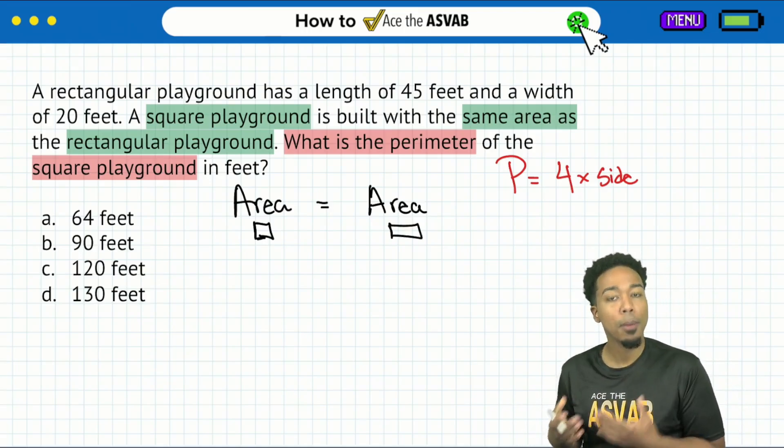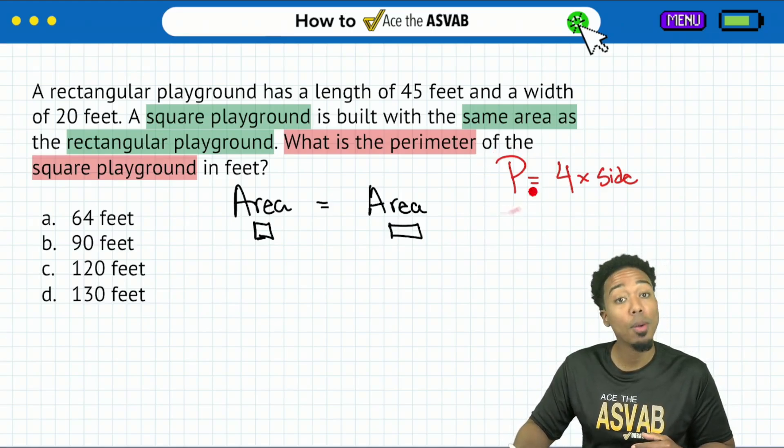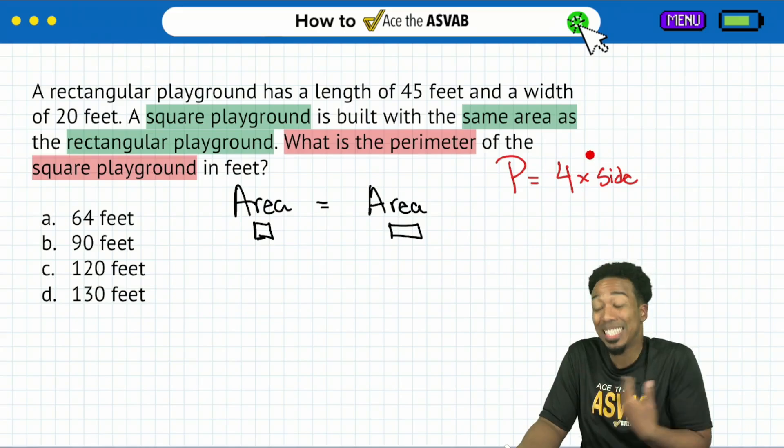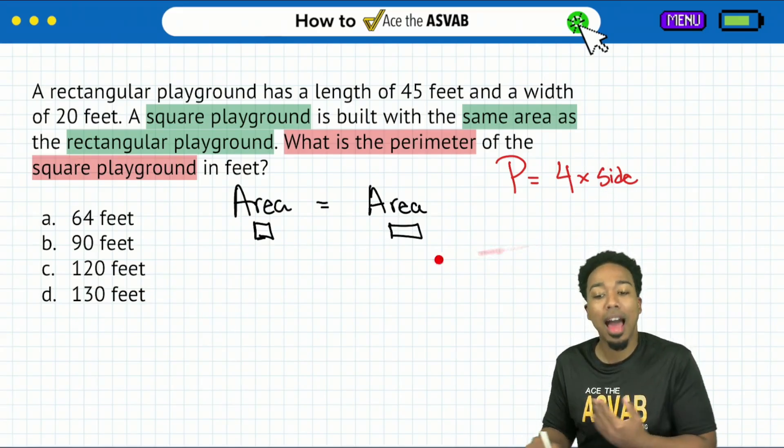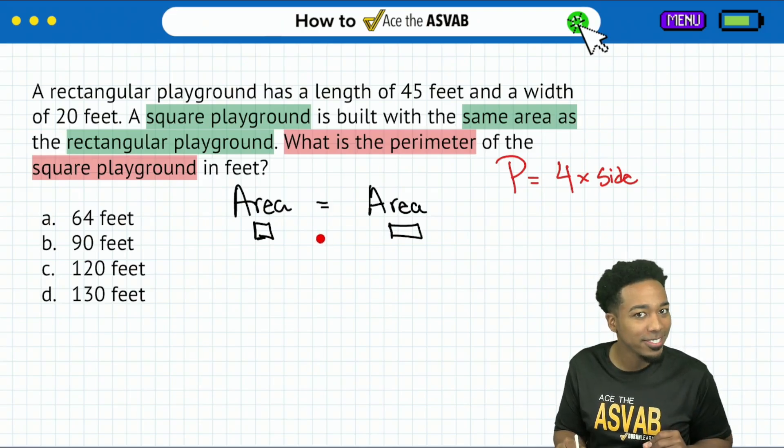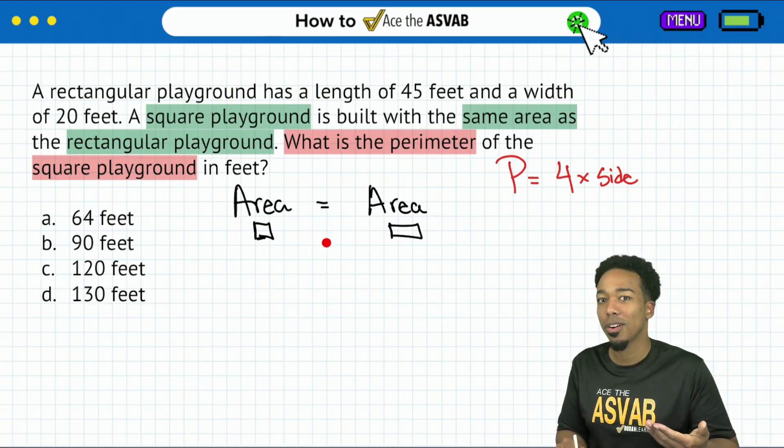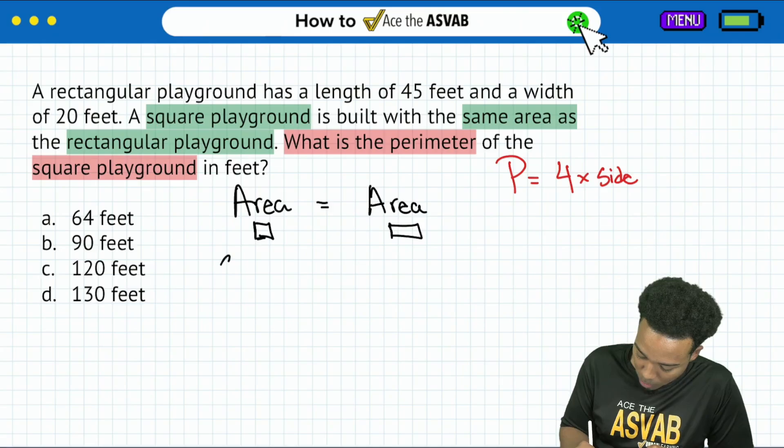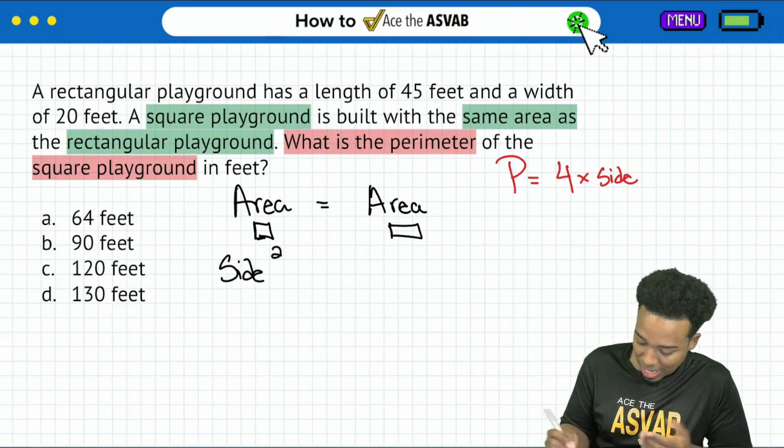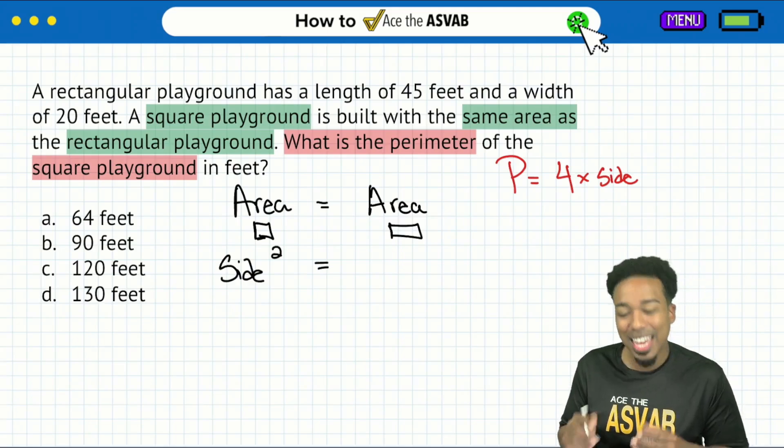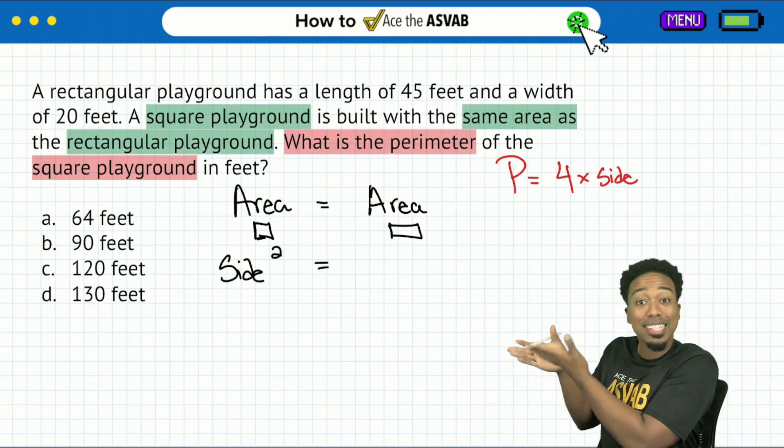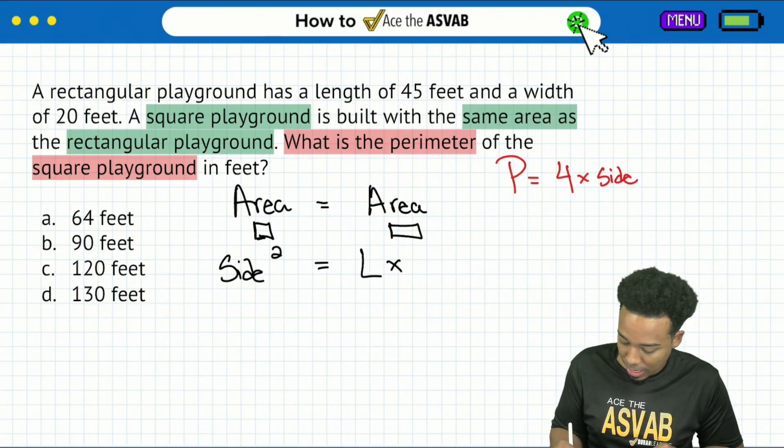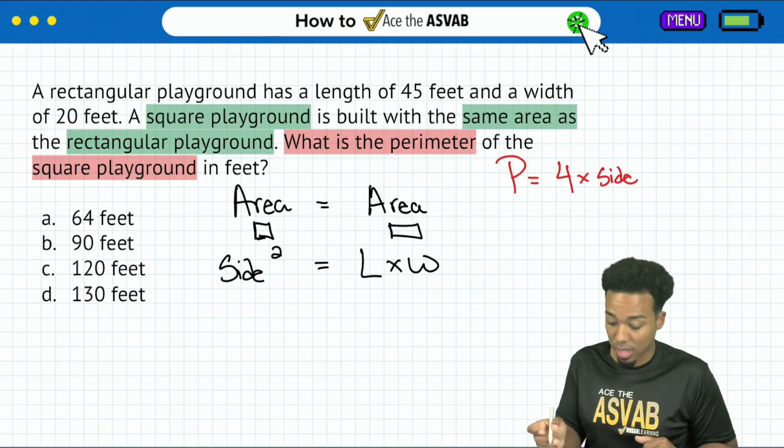And to get the perimeter of a square, we will multiply the side by four. Once we have that, then we're good to go. Let's find the side. A rectangular playground has a length of 45 feet and the width of 20 feet. That's not anything about the square. So don't worry about that yet. But then we see that it says a square playground is built with the same area as the rectangular playground. So we know right over here, square playground, same area as rectangular playground.